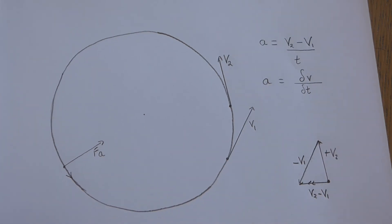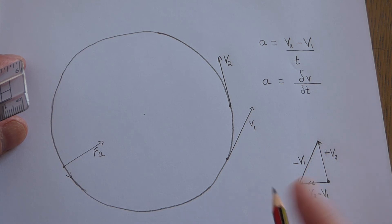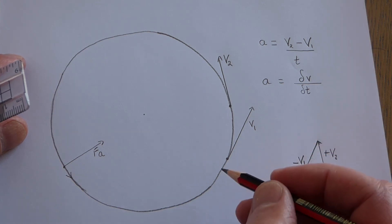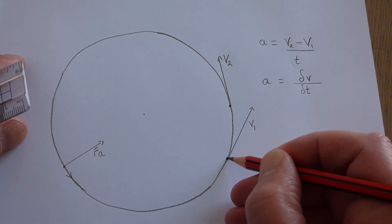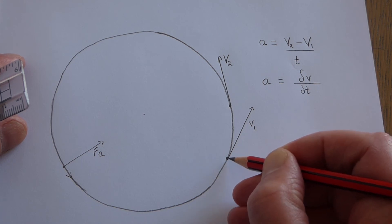Strictly speaking, if you want to work out the acceleration at that point, you should look at the first velocity and then allow the object to change its velocity by an infinitely small amount.